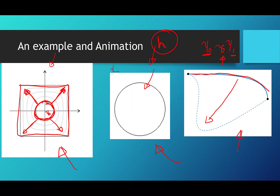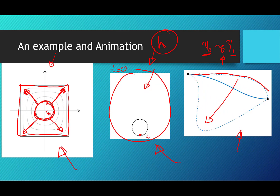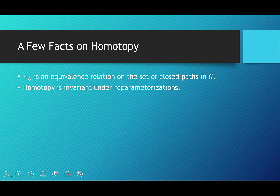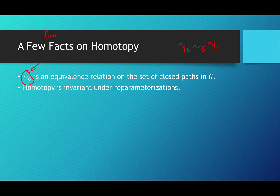At s=0 in the middle picture you're the big circle, and at s=1 you're that point. That's homotopies in a very quick crash course. A few facts: we use the tilde symbol — Gamma-naught is G-homotopic to Gamma-one. The reason is that homotopy is actually an equivalence relation on the set of closed paths in G. So it partitions them into equivalence classes — a nice fun fact and a nod to your proof-based math course.